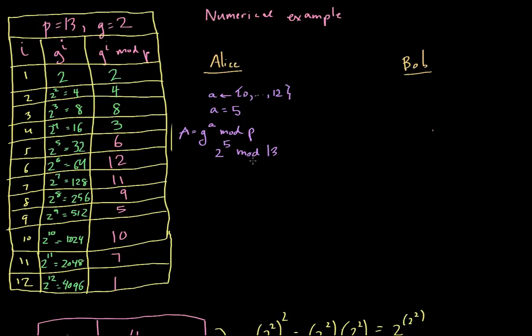And we actually computed that. That's 2 to the 5th is 32. And then 32 mod 13 is going to be equal to 6. So she's going to then send, and so this is actually just equal to 6. So Bob is going to get the value A equals 6 here.